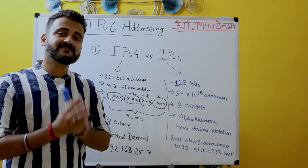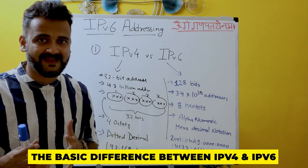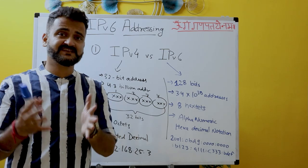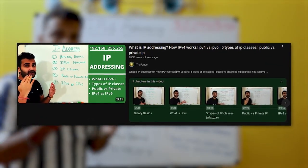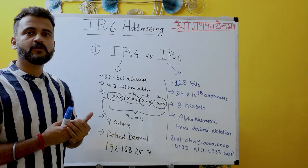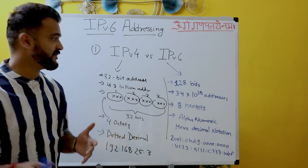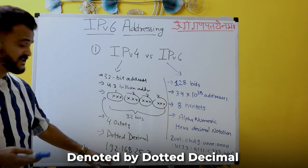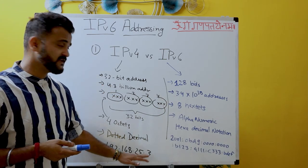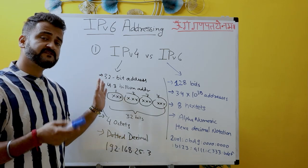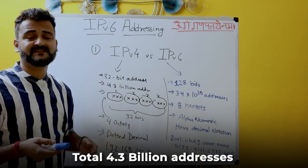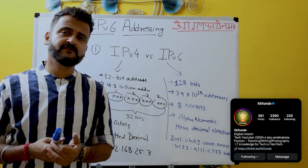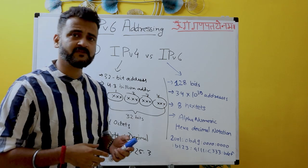Let's understand the basic difference between IPv4 and IPv6. If you haven't watched my video explaining IPv4, I recommend checking it out for good context. IPv4 is the traditional way of assigning IP addresses — it is a 32-bit address denoted by dotted decimal notation, something like 192.168.25.3. There are a total of 4.3 billion addresses, and we are not fully done with IPv4.